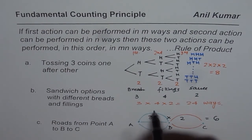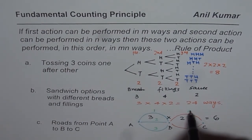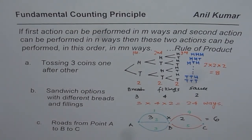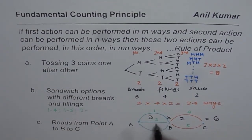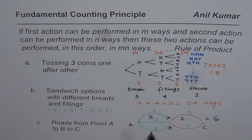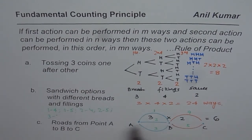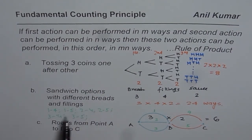You can number these roads and find the options. From A to B: road one, road two, road three. From B to C: road four and road five. One way is road one then road four, another is road one then road five. Taking road two gives options two-four or two-five. Taking road three gives options three-four or three-five. As you can see: one, two, three, four, five, six — six different ways.